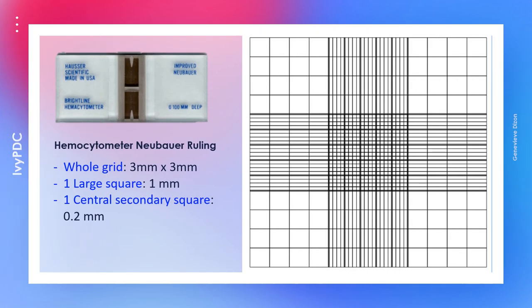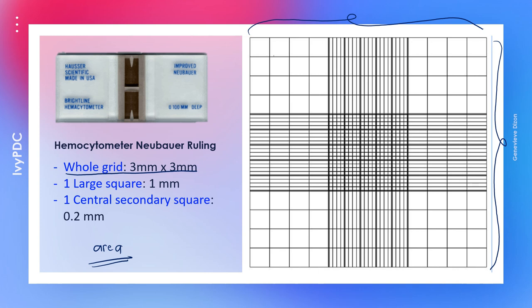Knowing the measurements of the grid is important for computing the area in the total cell count. The whole grid is 3 mm by 3 mm, meaning each large square measures 1 mm each. The central large square is divided into 25 secondary squares, and each of these secondary squares measures 0.2 mm.